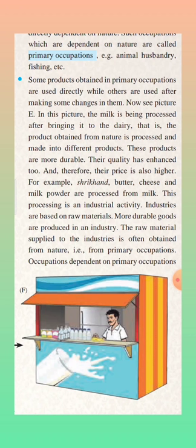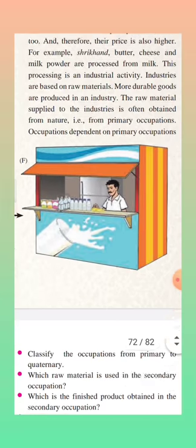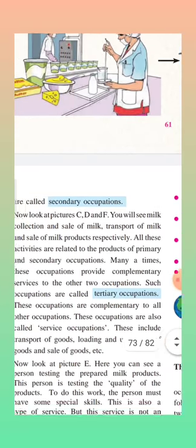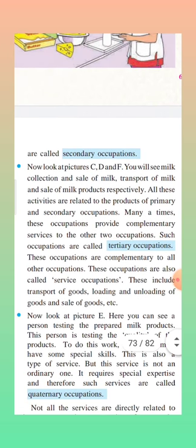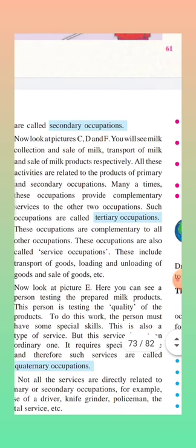Industries are based on raw material; more durable goods are produced in an industry. The raw material supplied to the industry is often obtained from nature through primary occupations. So processing is a secondary occupation — in an industry or factory, processing goes on. Milk is obtained from nature and processed into shrikhand, butter, and cheese in the factory. An industry or factory is a secondary occupation. The secondary occupation needs raw material obtained from nature, so the occupation which depends on primary occupation is called secondary occupation.